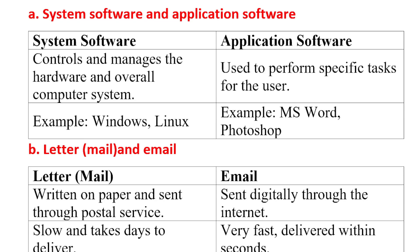The major difference: system software controls and manages the hardware and overall computer system, but application software is used to perform specific tasks for the user.